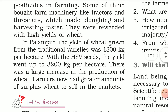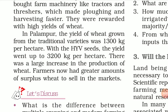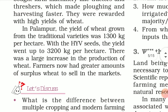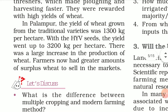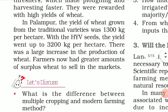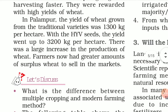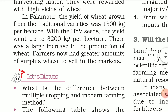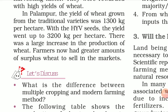In Palampur, the yield of wheat grown from traditional seeds was 1,300 kg per hectare. With HYV seeds and modern farming methods, the yield went up to 3,200 kg per hectare on the same land. That is approximately more than double the earlier production — a very significant increase.